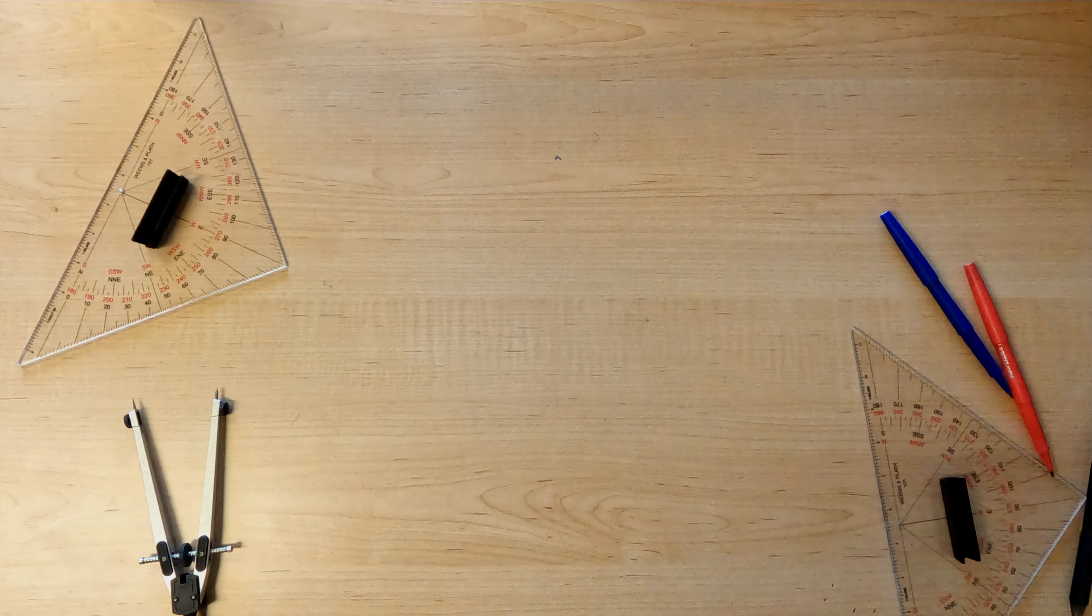So that's going to be 1, 2, 3, 40. So that's where our apparent wind is going to come from. And that's going to be at 15 degrees. So we'll measure out our 15 degrees.